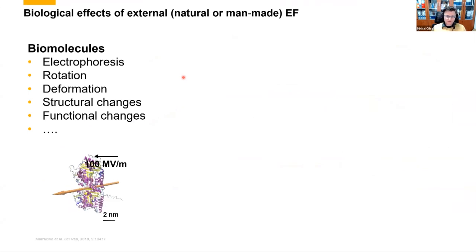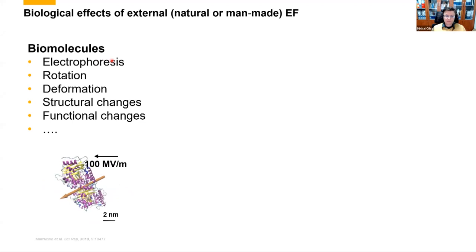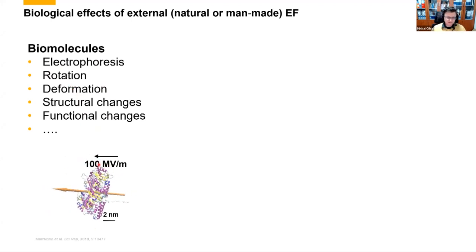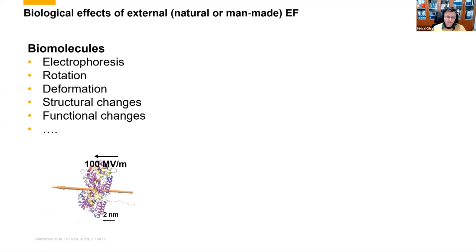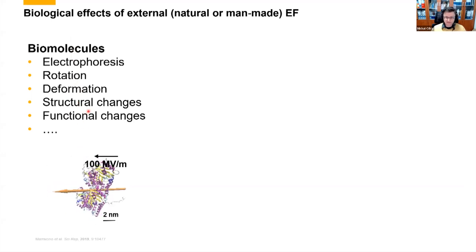A huge area of knowledge has been collected on biological effects of external — natural or man-made — electric fields. Starting hierarchically, at the biomolecule level, electric field will cause charged biomolecules to be dragged by electrophoresis. If the field is strong enough, it can rotate the molecule — as shown in molecular dynamics simulations of tubulin protein in an electric field. If the field is even stronger, it can cause deformations, structural changes, and functional changes. There are certain threshold levels needed to achieve these effects.